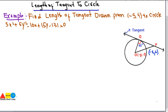We have the example: find the length of the tangent drawn from the point (-5, 4) to the circle 5x² + 5y² - 10x + 15y - 31 = 0.